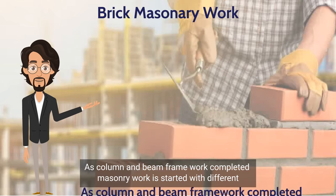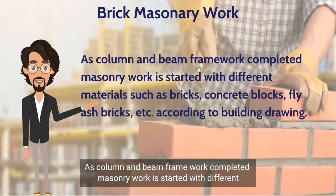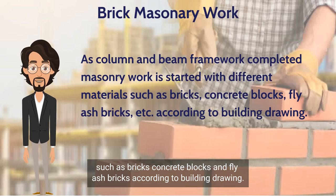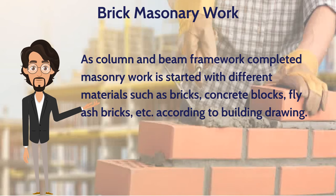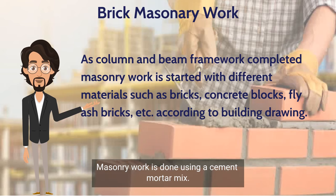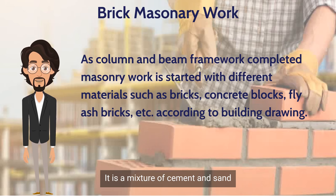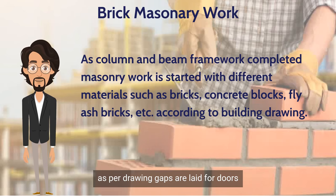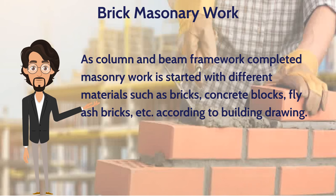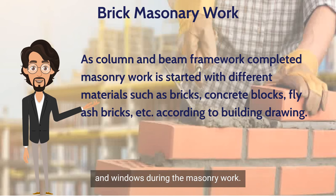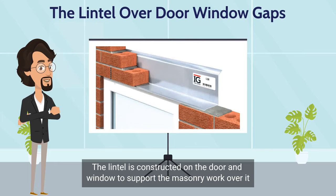As the column and beam framework is completed, masonry work is started with different materials such as bricks, concrete blocks, and fly ash bricks according to building drawings. Masonry work is done using a cement mortar mix — a mixture of cement and sand. As per drawings, gaps are laid for doors and windows during the masonry work. The lintel is constructed over the doors and windows to support the masonry work above.